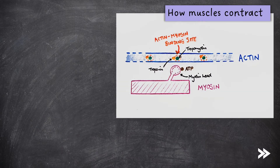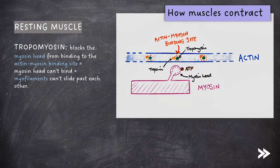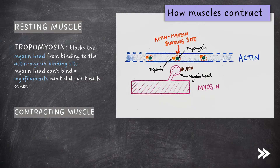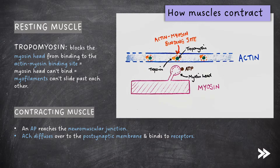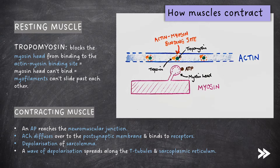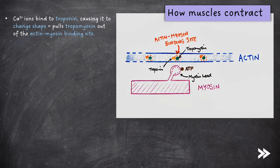So, how does gross muscle contraction occur? When the muscle is resting, we have something called tropomyosin that blocks the myosin head from binding to the actin myosin binding site, meaning that myofilaments can't slide past each other. When a muscle contracts, first of all an action potential reaches the neuromuscular junction. Acetylcholine diffuses over to the postsynaptic membrane and binds to receptors, leading to depolarisation of the sarcolemma. A wave of depolarisation spreads along the T-tubules and sarcoplasmic reticulum, causing the sarcoplasmic reticulum to release calcium ions into the sarcoplasm. Next, calcium ions bind to a protein called troponin, which is bound to tropomyosin, causing it to change shape, pulling tropomyosin out of the actin myosin binding site. Note that the specification says we do not need to know about troponin; however, it is useful in understanding how tropomyosin leaves the actin myosin binding site in the first place.